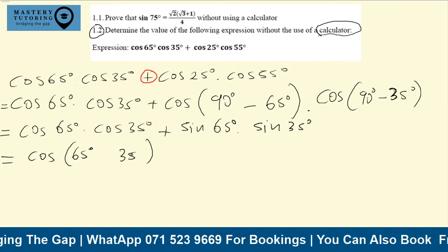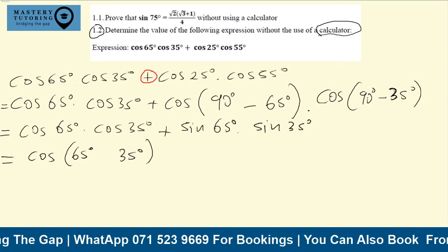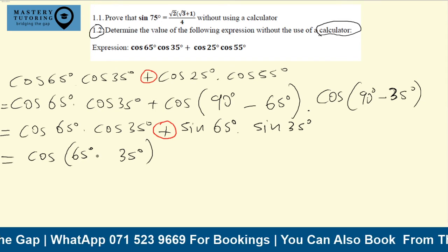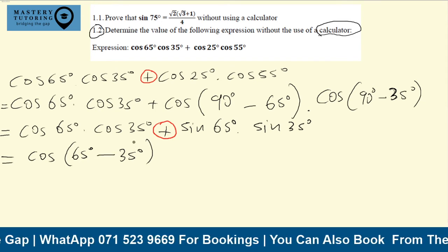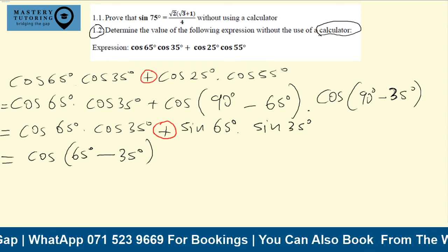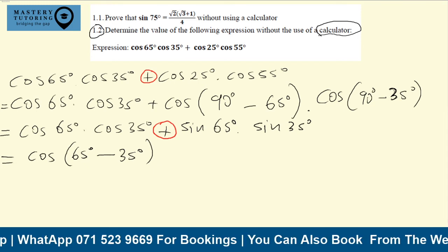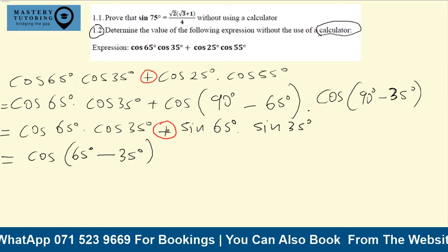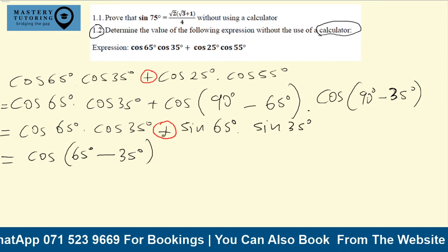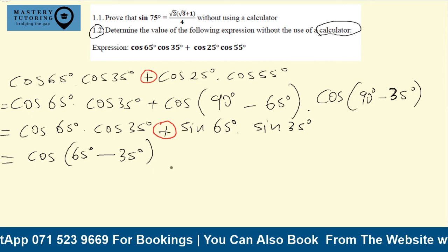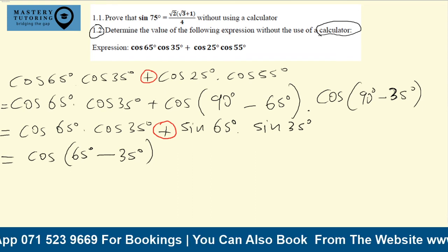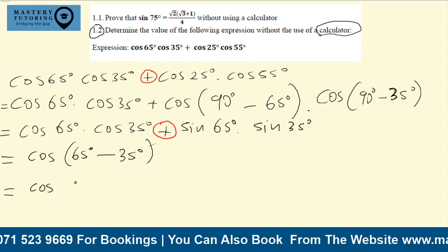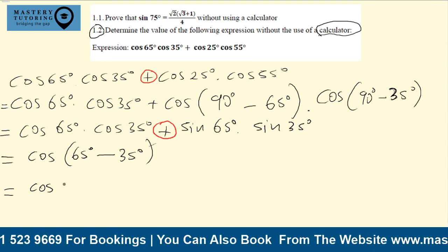We now have cosine on the left of the plus and sines on the right — this matches the cosine compound angle formula. Applying it: cos(A − B) = cosA · cosB + sinA · sinB. The plus sign in the expression means the sign inside the brackets is minus. So this equals cos(65° − 35°) = cos30°.